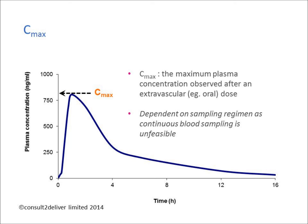Clearly, we cannot take continuous blood samples from subjects, as we do not wish to make them anemic. When designing a sampling regimen, samples need to be placed at time points close to where the expected CMAX is thought to occur. Careful consideration of previous pharmacokinetic data is therefore required.